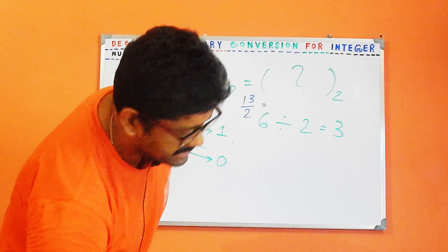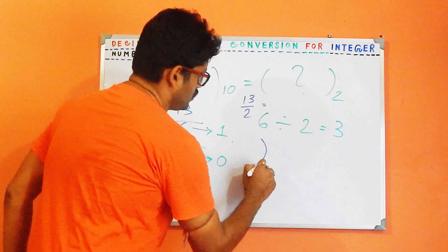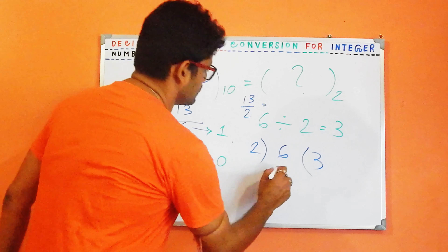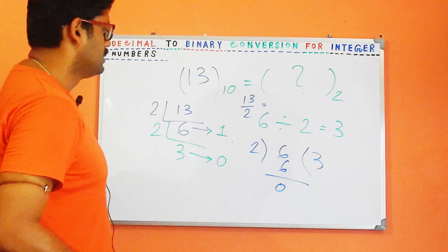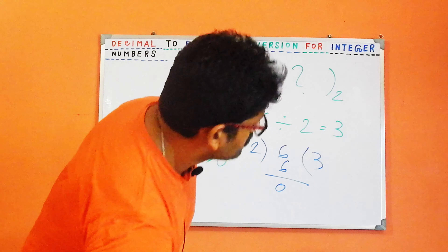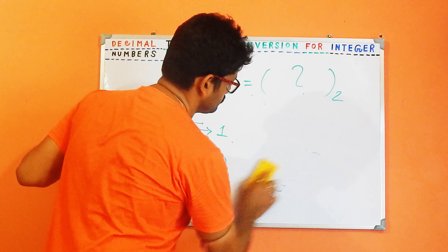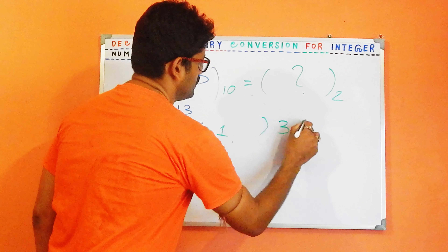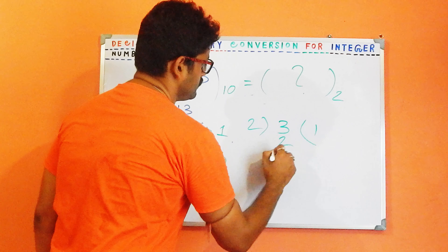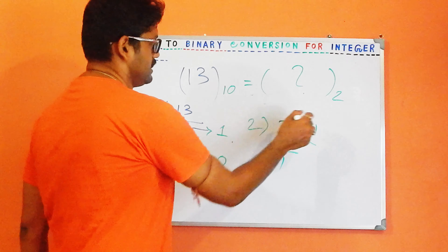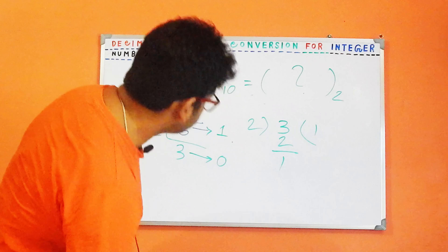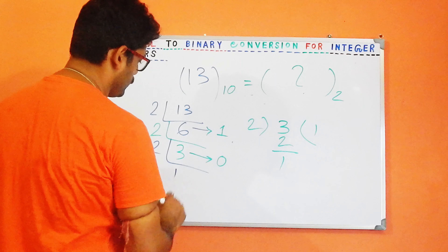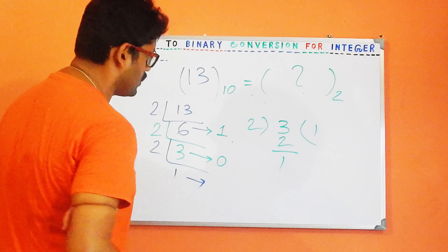For the next step, we take 6 and divide by 2. Six divided by 2 gives us 3, and there is no remainder, so the remainder is 0. Then we divide 3 by 2: the result is 1 and the remainder is 1, because 3 is not evenly divisible by 2.